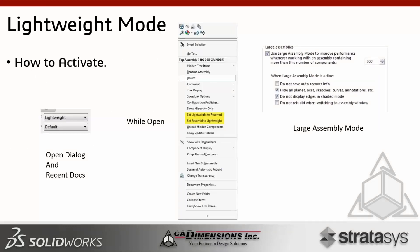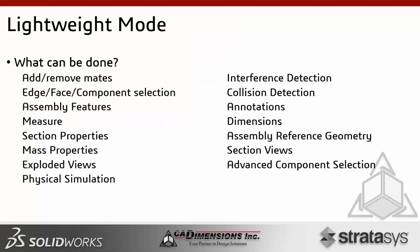How do you set something to lightweight mode? In the open dialog and recent dialog, there's a pull-down menu where you can pick Large Design Review, Large Assembly Mode, or Lightweight. While a document is open, you can right-click on the assembly and set the resolved assembly to lightweight. There's also Large Assembly Mode, which is a threshold — once the assembly reaches a certain number of components, it automatically turns on. 500 is the default setting.